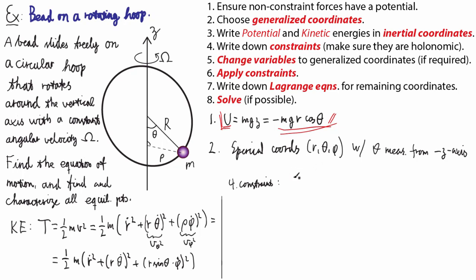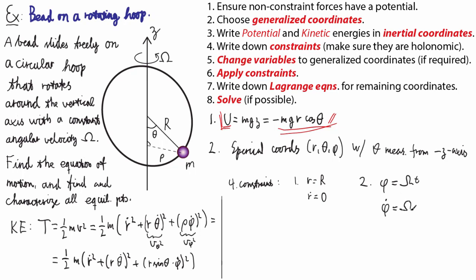The first constraint is just that R is a constant equal to capital R, which means that R-dot is zero. The second constraint has to do with the rotation: phi equals capital Omega times t, which ensures a constant angular rotation around the z-axis. That means phi-dot equals omega.